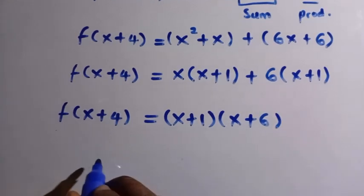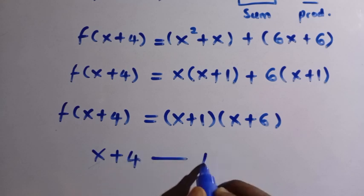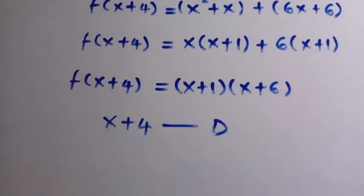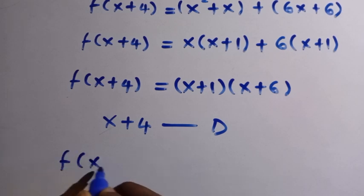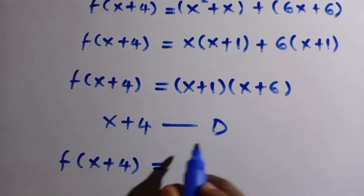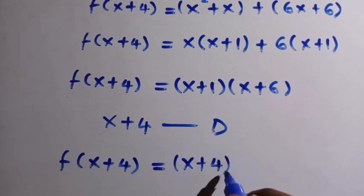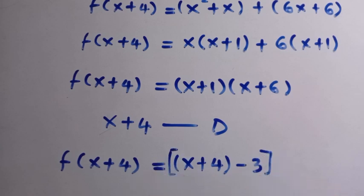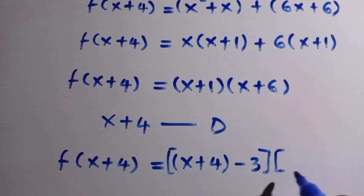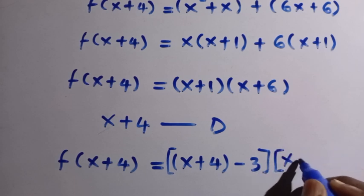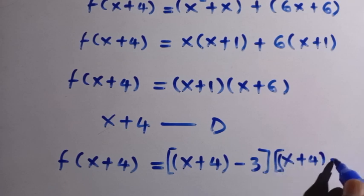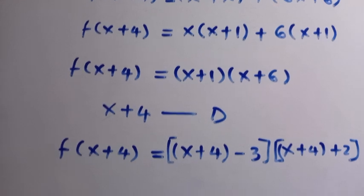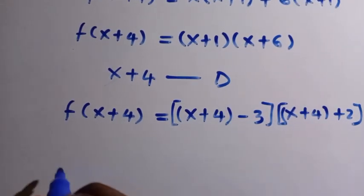Our domain is x+4, so we need to make each factor look like x+4. For the first factor x+1, we rewrite it as (x+4) minus 3. For the second factor x+6, we rewrite it as (x+4) plus 2. Now we can replace x+4 with x.